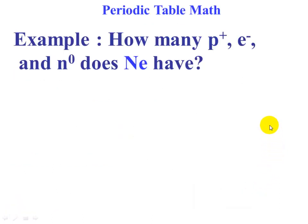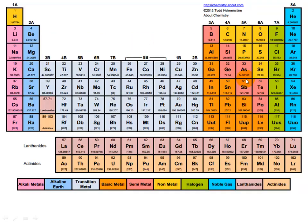Let's take a look at some periodic table math using the same kind of example. Here we have neon—we're trying to find how many protons, electrons, and neutrons neon has. Let's look at the periodic table. Neon, we find right here.